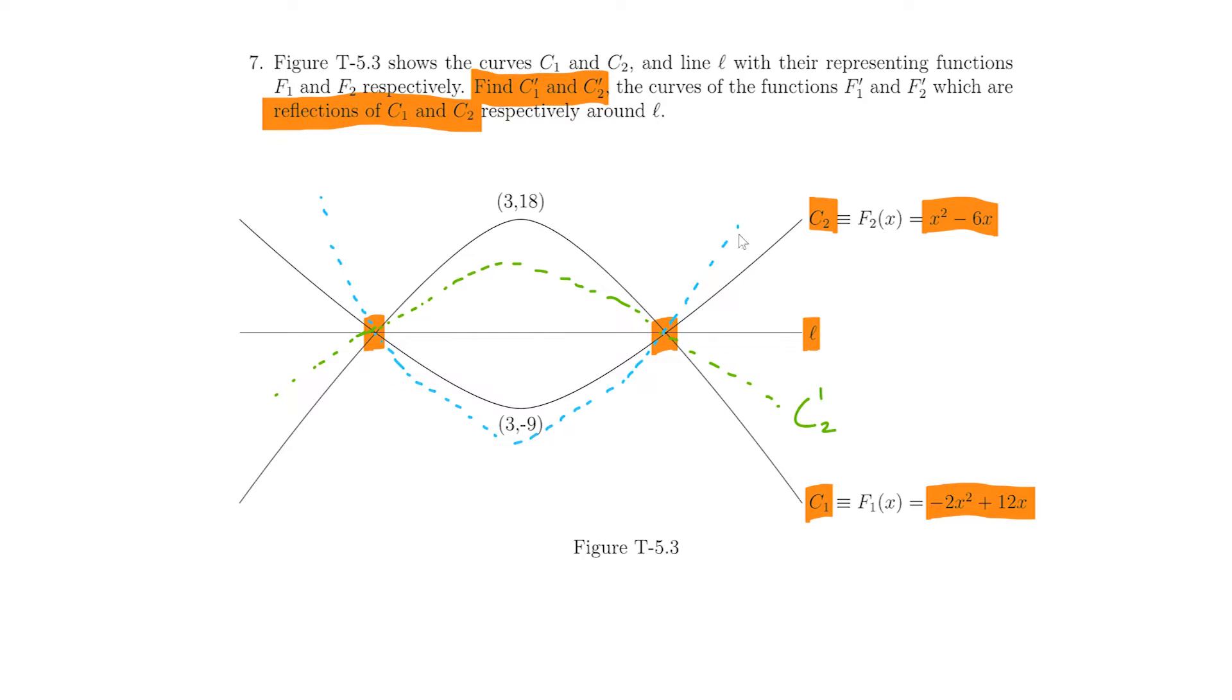And these are what we are trying to find out, C1 dash and C2 dash. So, this should be C2 dash and this would be C1 dash. For all of this we have to first find the line L and that we can find when we solve for the equality of these two functions.